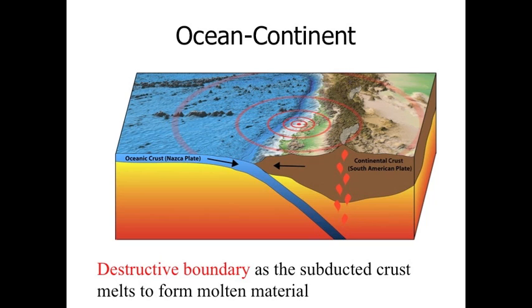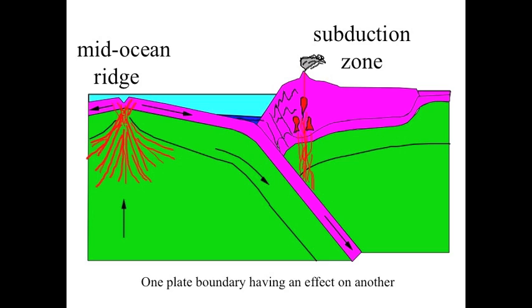At one time you could have a plate diverging and creating a mid-ocean ridge, while somewhere else on Earth the end of that plate could be subducting. So divergent and convergent plate boundaries can occur simultaneously — in one region you have one type of movement, and in a different region on Earth you can have a different type of movement.